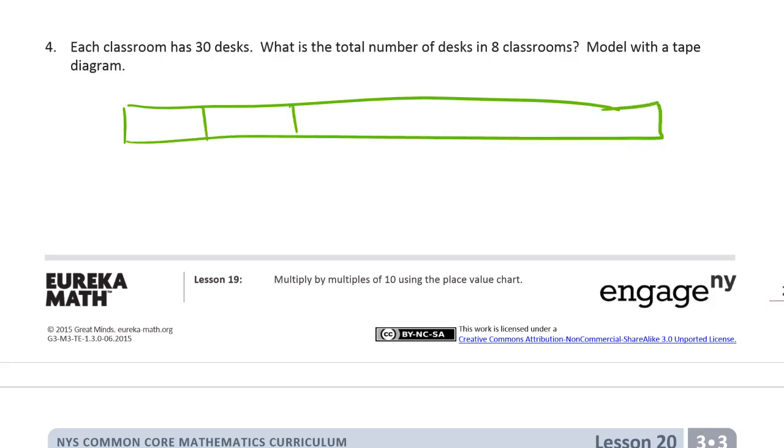One, two, three, four, five, six, seven. Each classroom is 30, right? So this is a classroom. And it's 30 desks. They all have 30.